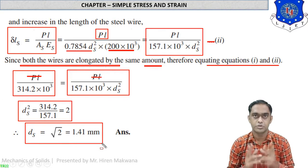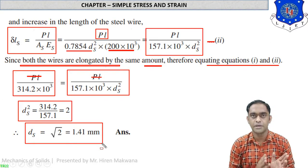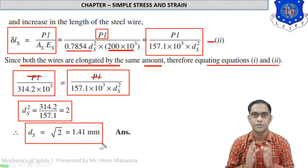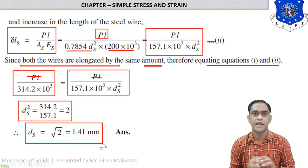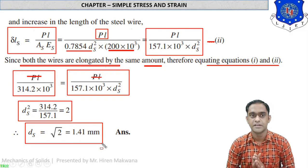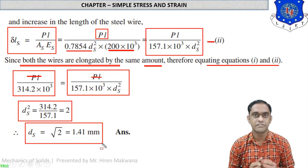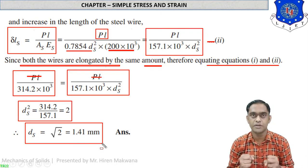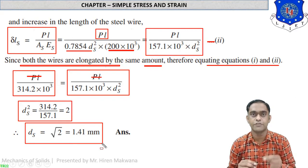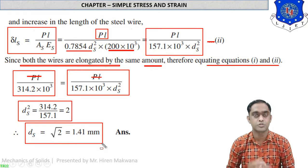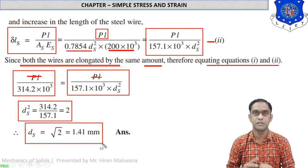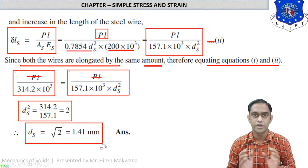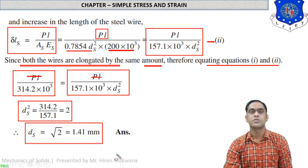For the same load, same length, and same elongation, the diameters differ between copper and steel. Copper is a weaker material requiring 2 mm diameter to sustain the load, while steel is a stronger material requiring only 1.41 mm — about 0.6 mm less diameter than copper. Steel can sustain a large load with a smaller cross-section.